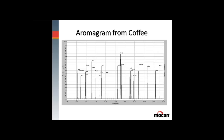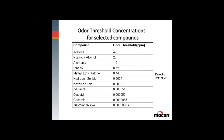One concept we need to understand when dealing with aromas is odor threshold concentrations. I show here a table with a number of compounds many people may be familiar with. At the top of the table are low-impact odorants with very high threshold concentrations — meaning that is the approximate concentration that needs to be exceeded before most people would start to smell it. For example, isopropyl alcohol has a threshold concentration greater than 26 parts per million.